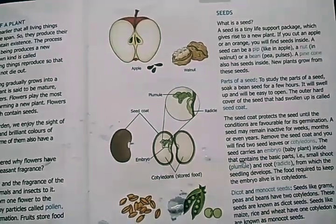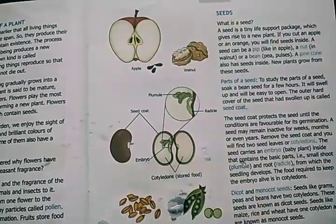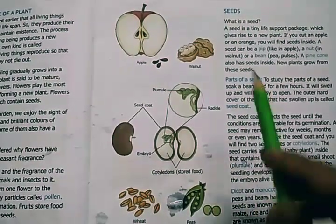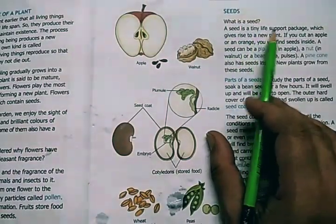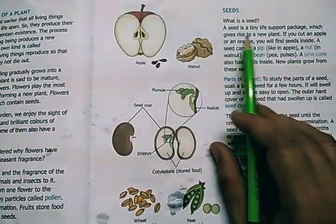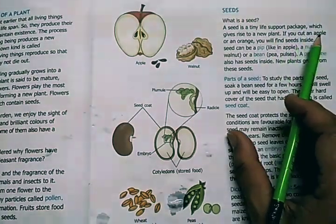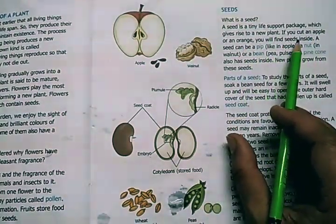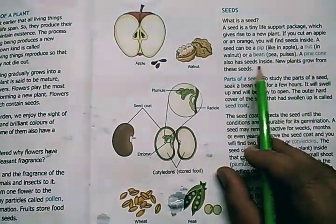Welcome children. Today through this video we are going to study about the parts of a seed. A seed is a tiny life support package which gives rise to a new plant. If you cut an apple or an orange you will find seeds inside. New plants grow from these seeds.